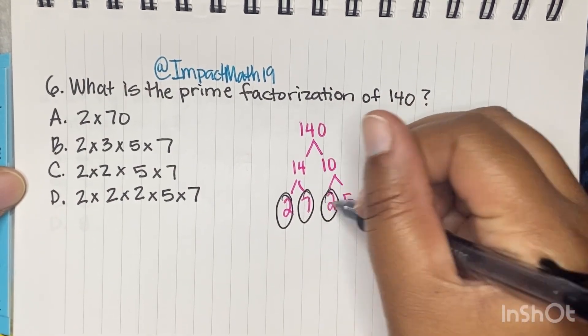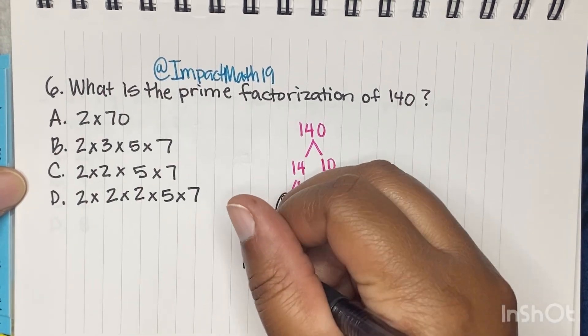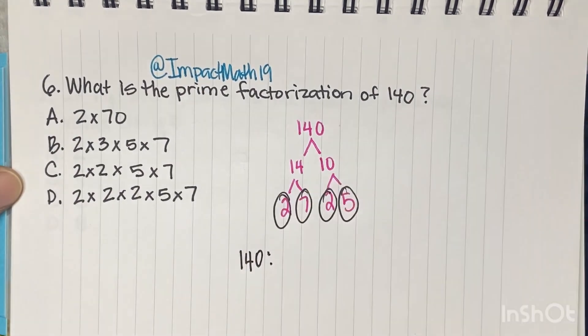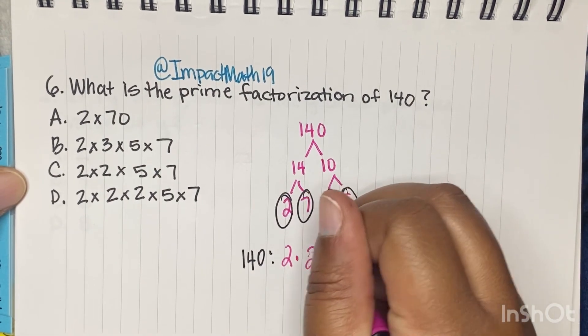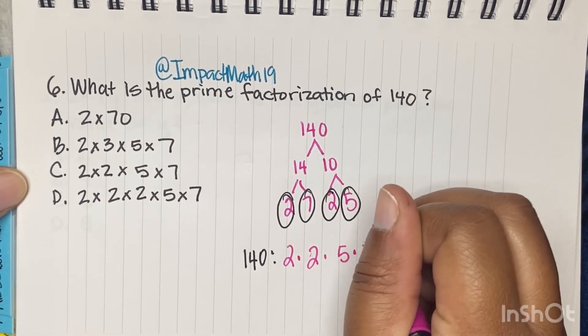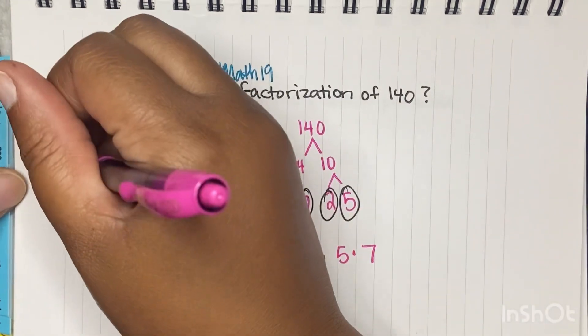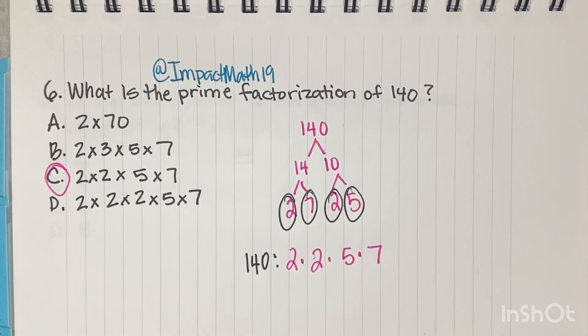And so we're going to circle all the primes. So we know 140, the prime factorization is going to be two twos, one five, and one seven. So if you said C was your answer, you were right on. Congrats, congrats. Thanks for watching. And I most definitely will catch you on the next one. Don't forget to subscribe, like, and share. Alrighty. Bye Impact Fam.